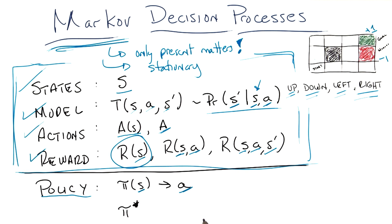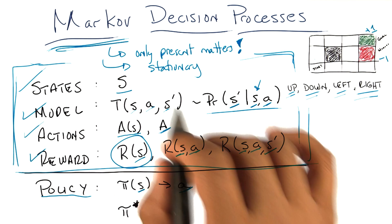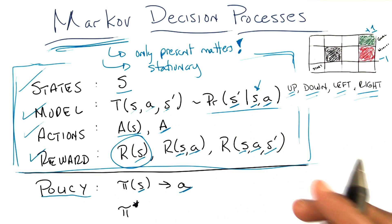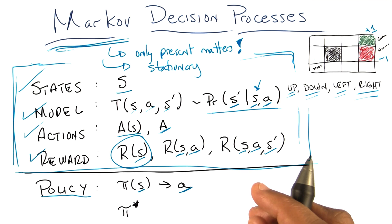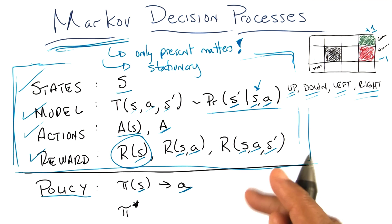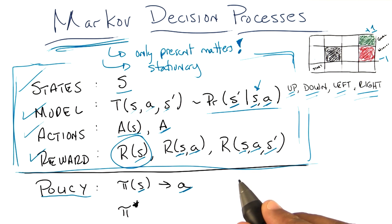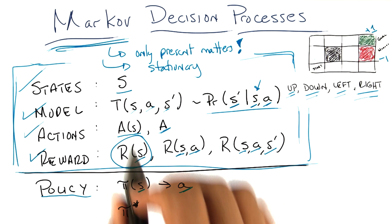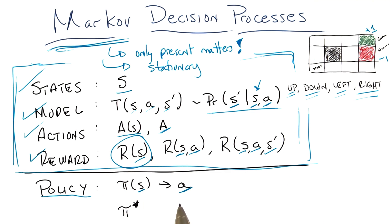Is it like a hint? No, it just tells you this is the action. I mean, I suppose you don't have to do it, but the way we think about Markov decision processes is that this is the action that will be taken. So it's more of an order? Yes, it's a command. So that's all a policy is — a policy is a solution to a Markov decision process.